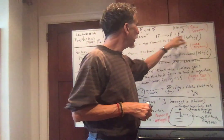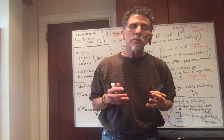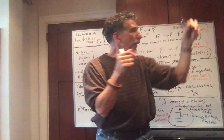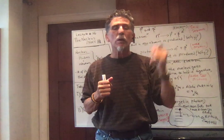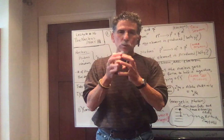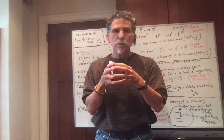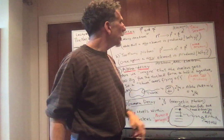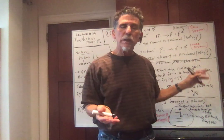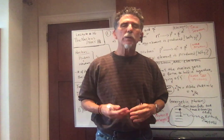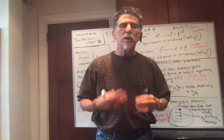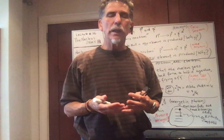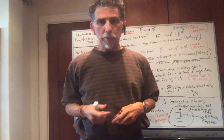A new element is produced because we're gaining a proton. Inside the nucleus, a neutron changes to a proton — which stays within the nucleus — and the negative beta particle, the electron, comes flying off. So if element 30 undergoes negative beta decay, it becomes element 31. If element 30 undergoes six negative beta decays, it becomes element 36, because you've added six protons. Every time it negative beta decays, you add a proton and become a new element.